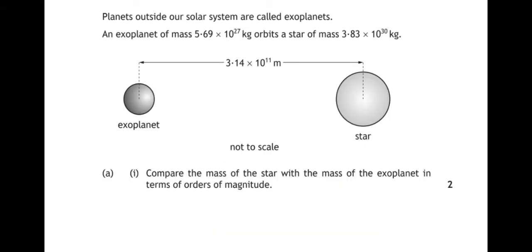Question number five. Planets outside our solar system are called exoplanets. An exoplanet of mass 5.69 times 10 to the power of 27 kilograms orbits a star of mass 3.83 times 10 to the power of 30 kilograms. And here's a diagram of them. And it shows us that they are 3.14 times 10 to the power of 11 meters apart. Part A1, compare the mass of the star with the mass of the exoplanet in terms of orders of magnitude.